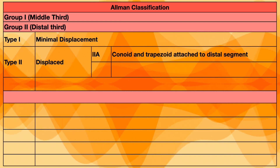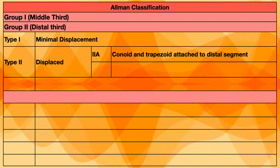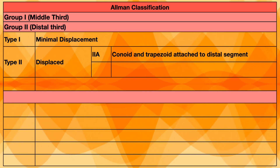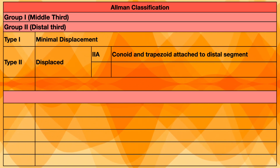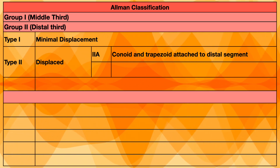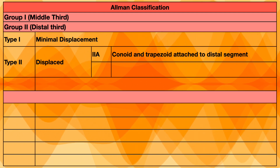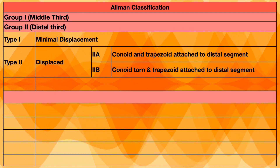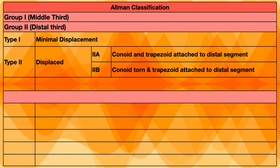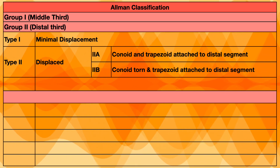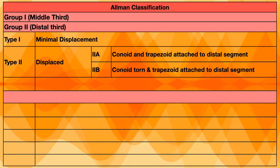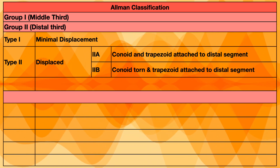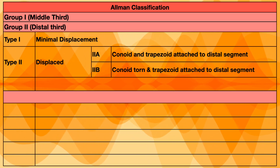Type 2 is further divided into type 2A and type 2B. In type 2A, both the conoid and trapezoid ligaments are attached to the distal fragment, meaning the fracture is proximal to the conoid and trapezoid ligament attachments. In type 2B, the conoid ligament is torn and only the trapezoid ligament remains attached to the distal segment.